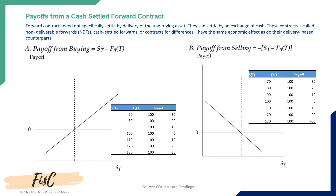In a cash-settled forward, parties don't actually deliver the product; instead they pay the difference between the agreed price and the market price. For example, if one party agrees to buy a stock at ten dollars and the market price is fifteen dollars, the selling party gives five dollars to the buyer so they can buy the stock at the market price — effectively paying only ten dollars from their own pocket. Similarly, if the market price were five dollars, the buyer would pay five dollars to the other party.